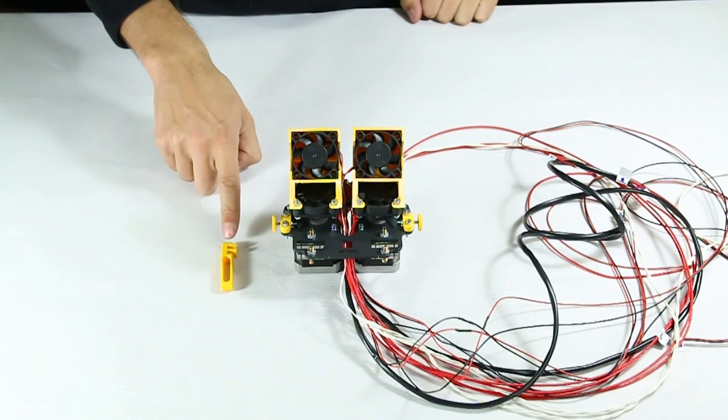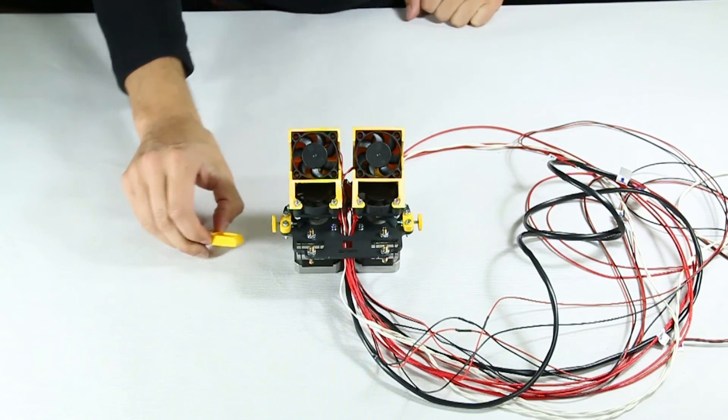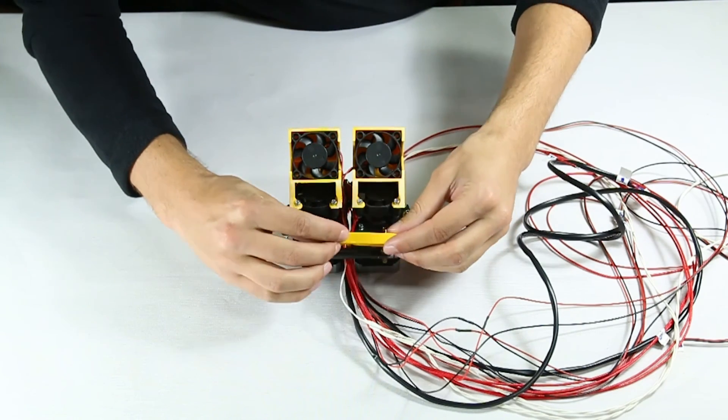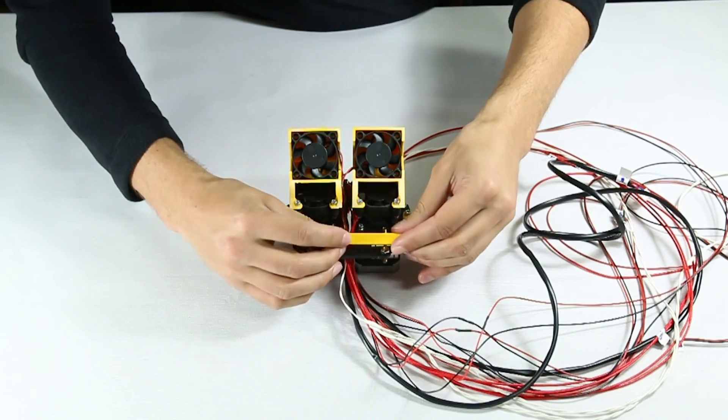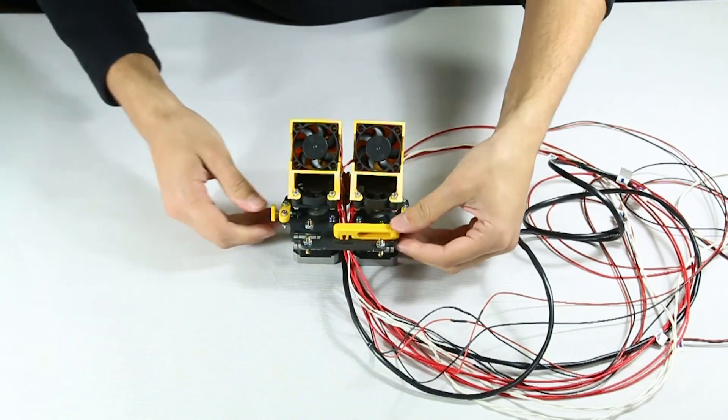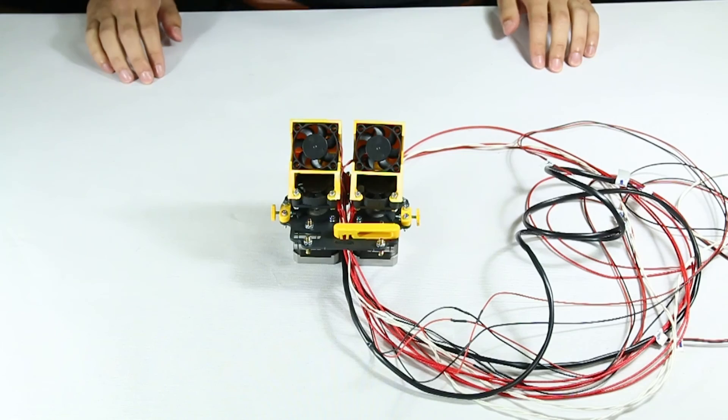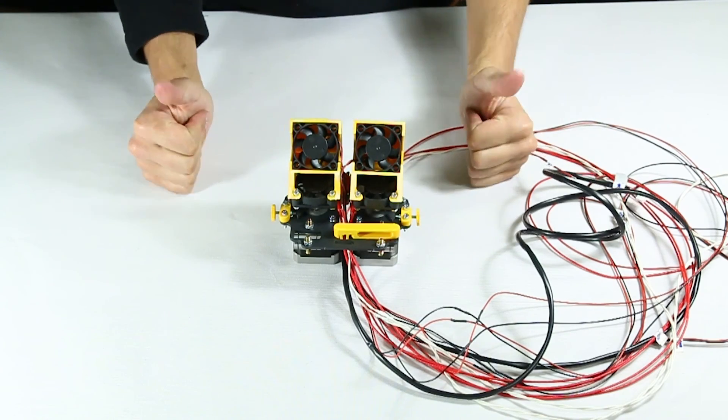The last step is to click this printed part into position. Don't forget to place it facing the correct way. And there, the dual extruder unit is ready.